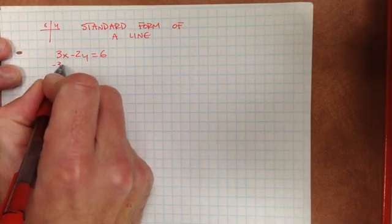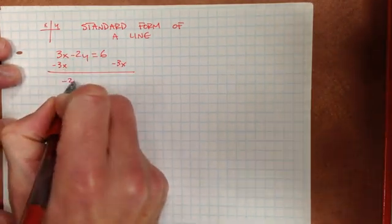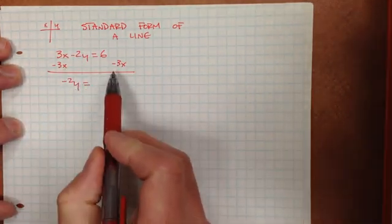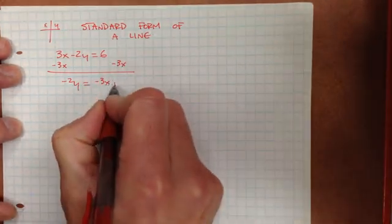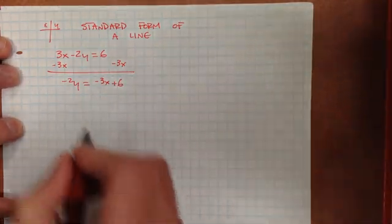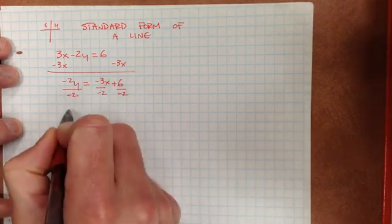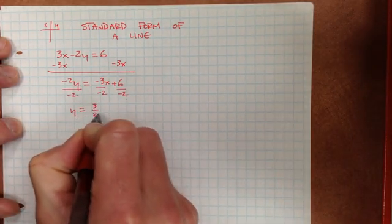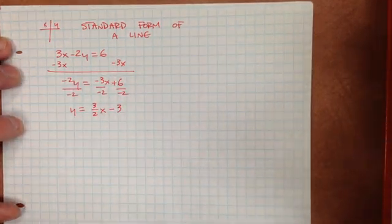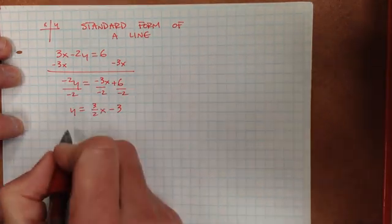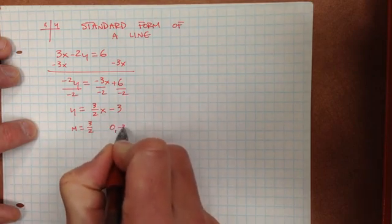First things first, let's subtract 3x from both sides. So you get negative 2y equals — I'm going to do a little rearranging — negative 3x, and then I have a positive 6. Our goal is to isolate y, so divide everything by negative 2. You get y equals positive 3 halves x minus 3. You now have it in y-intercept form with a slope of positive 3 halves and a y-intercept of (0, negative 3).